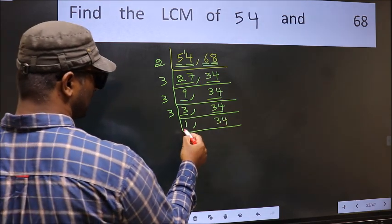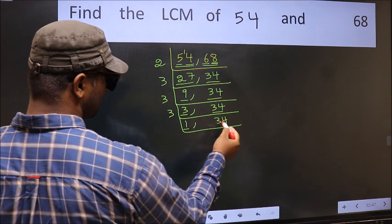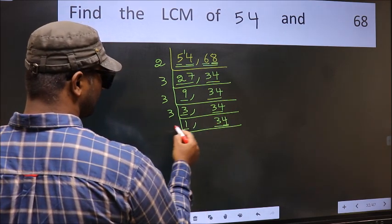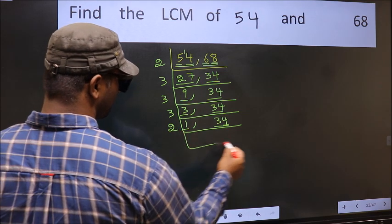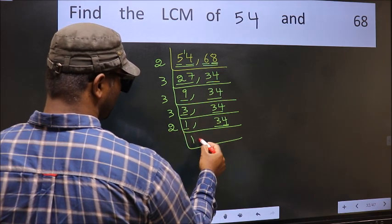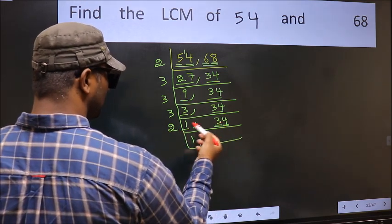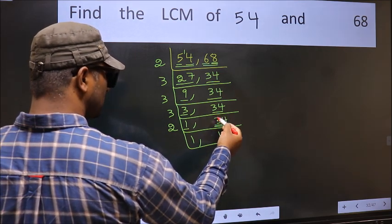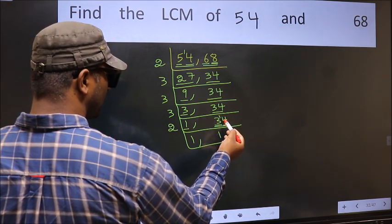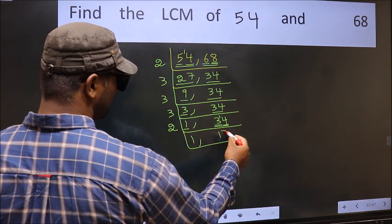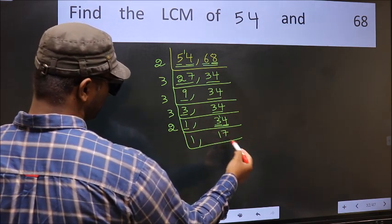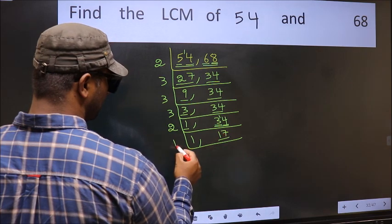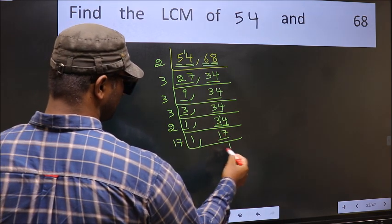Now we got 1 here, so focus on the other number, 34. The last digit is 4, so take 2. The first digit is 3 — a number close to 3 in the 2 times table is 2×1=2, so 3 minus 2 equals 1. Carried forward 14 — when do we get 14 in the 2 times table? 2×7 is 14. Now here we have 17. 17 is a prime number, so 17×1 is 17.